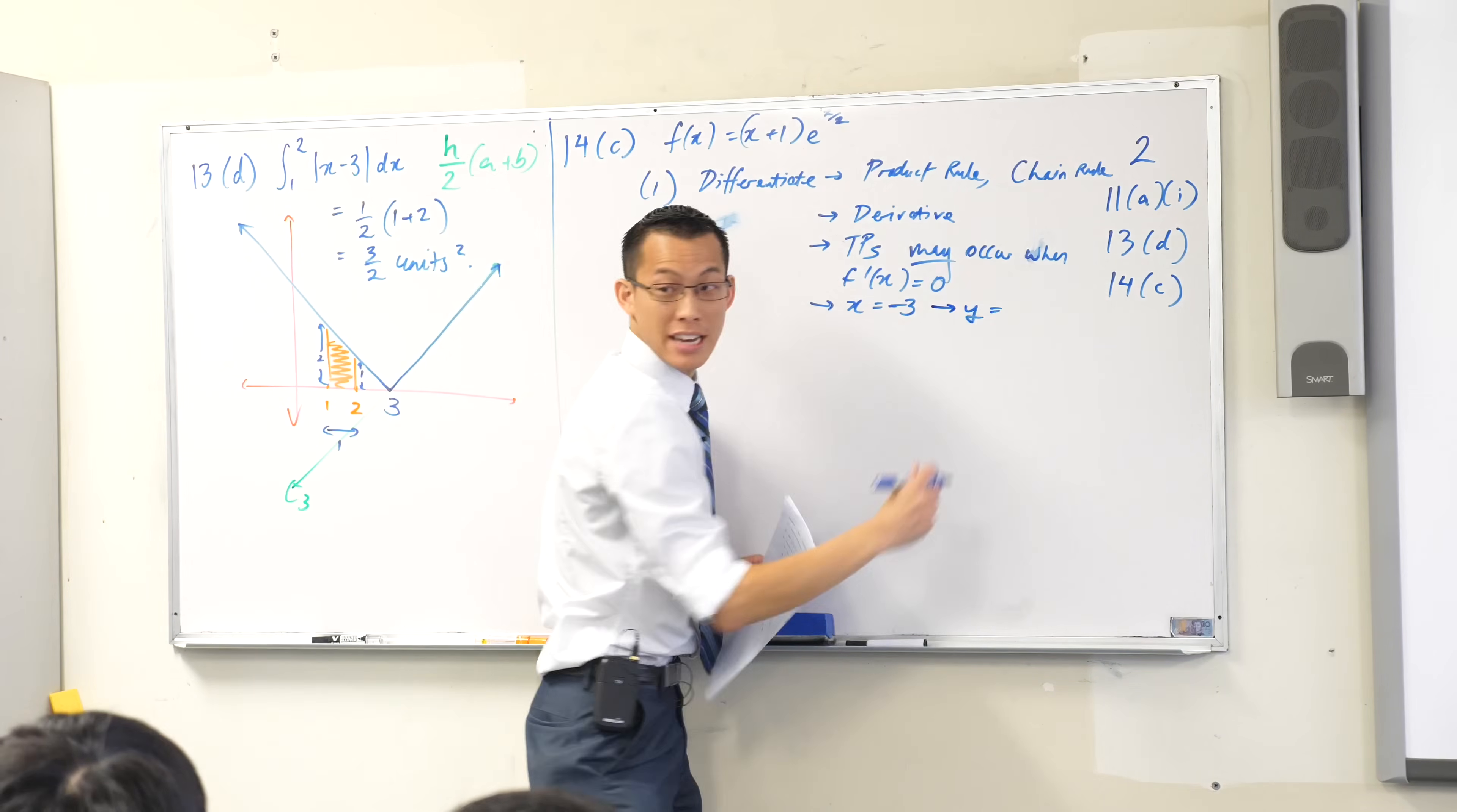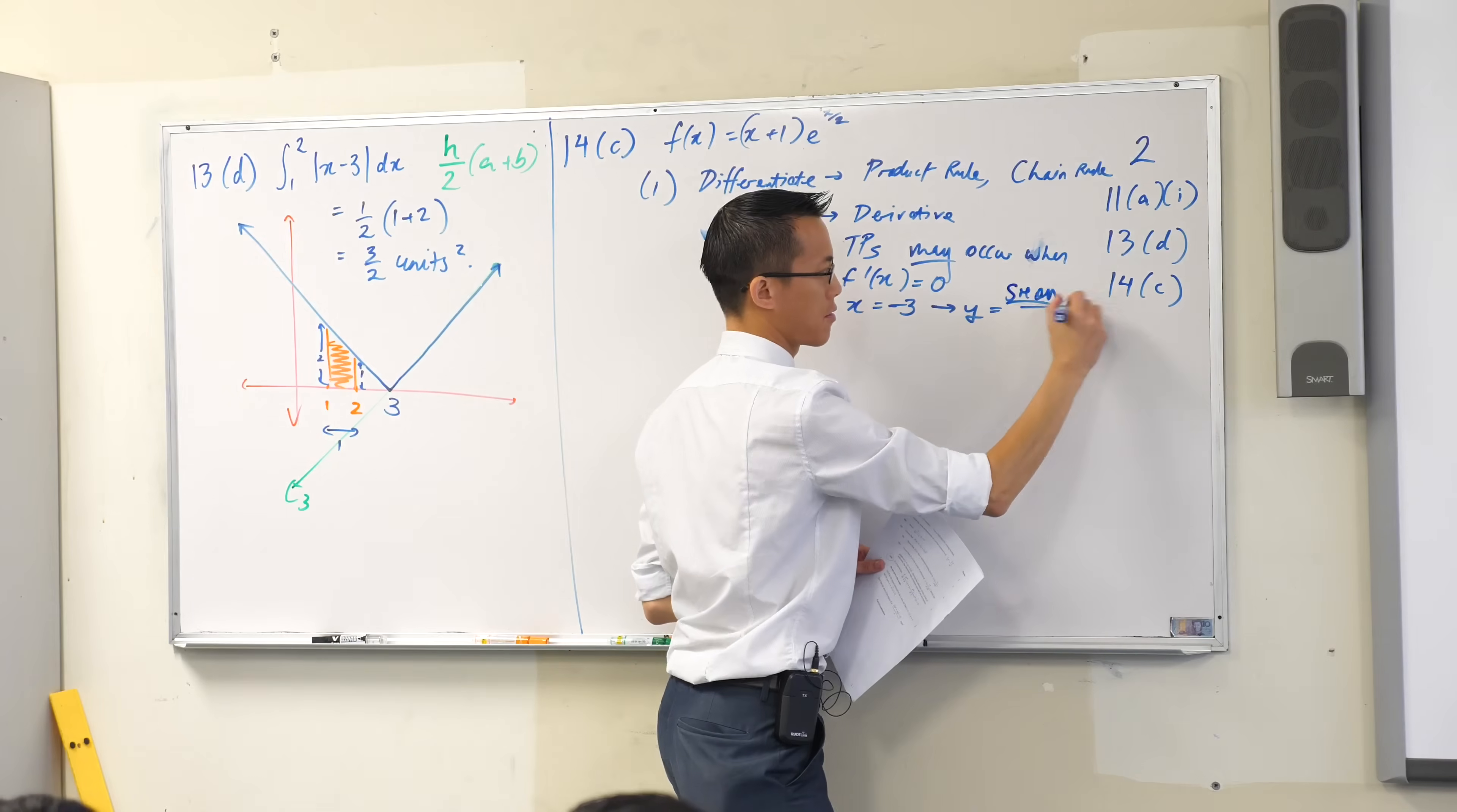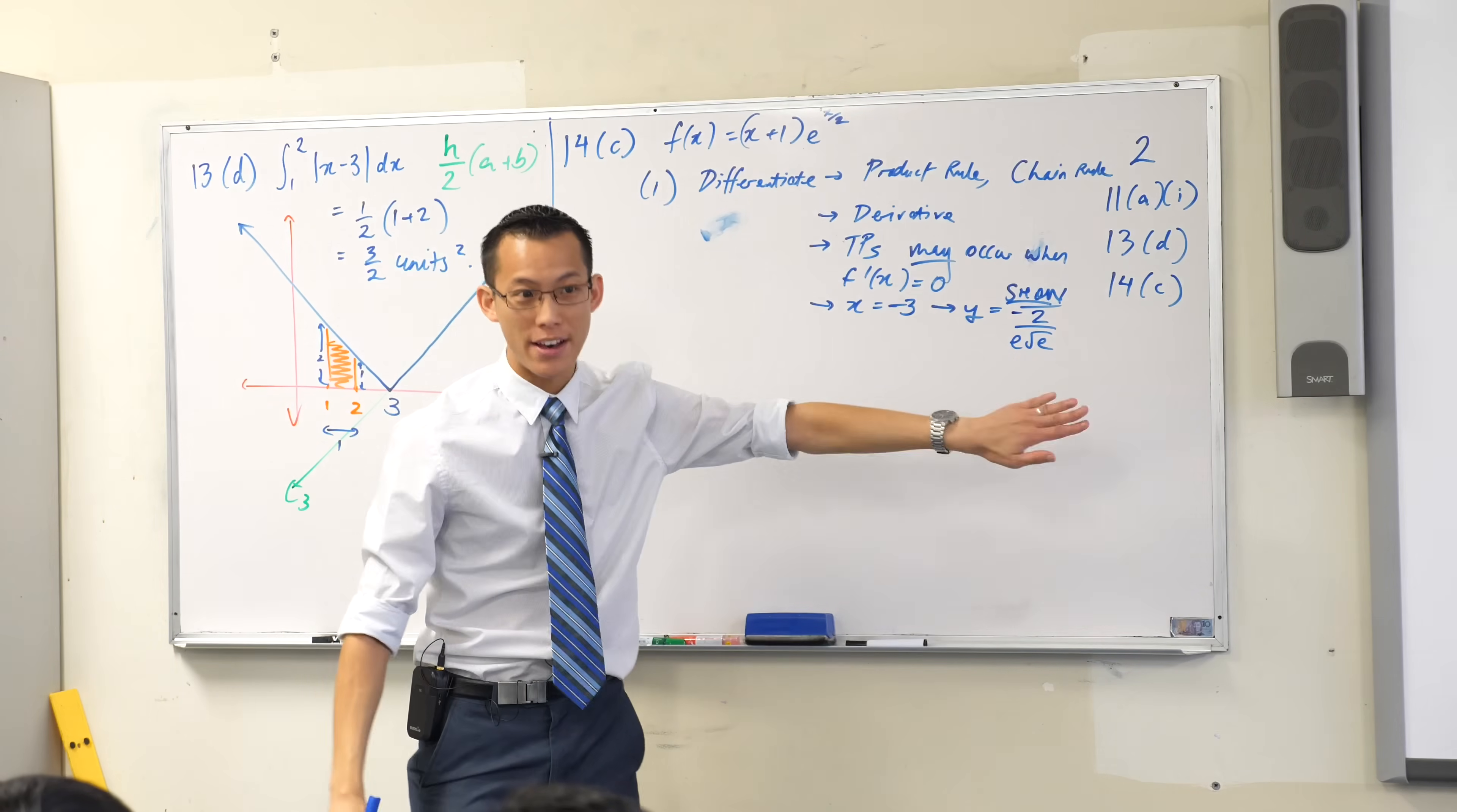I'm going to have to go and get that y value. Now they give you the y value, but what's the word in the question that tells me I have to find it? Show. Thank you very much. They've given it to you, but you still have to actually evaluate and get this value out of your equation. So now I've got an x value. I've got a y value. Am I done?